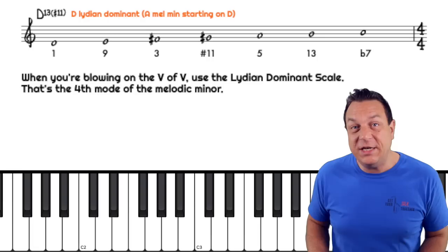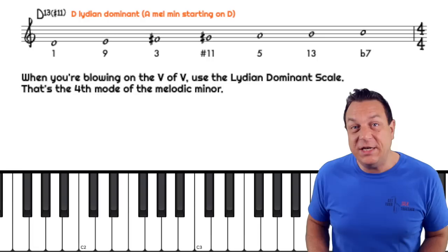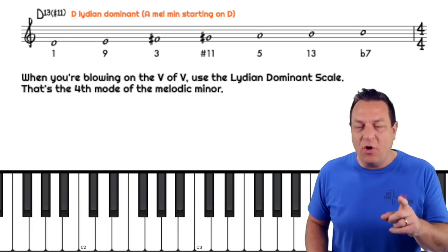The scale on the D7 chord — the secondary dominant in C major — would be an A melodic minor starting on D.